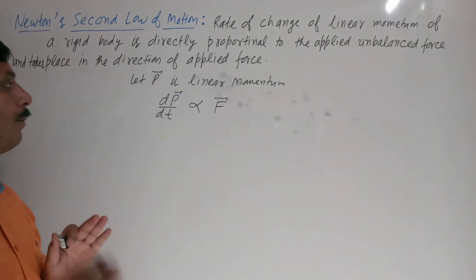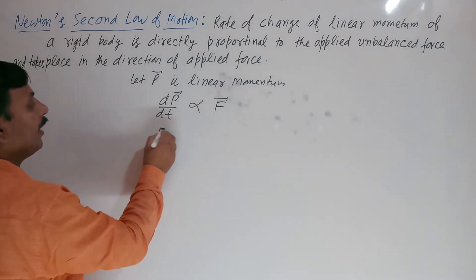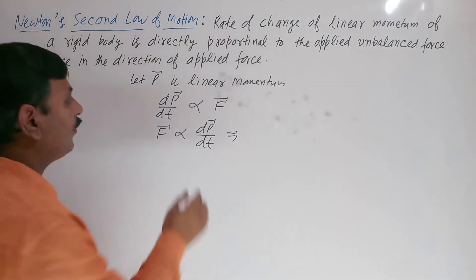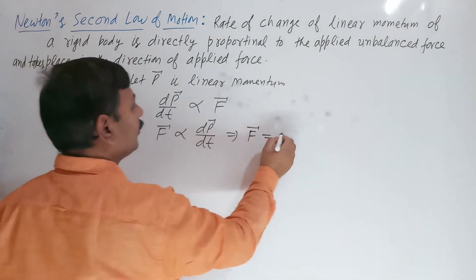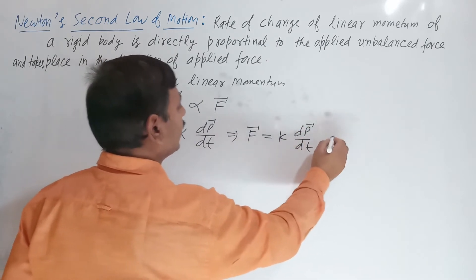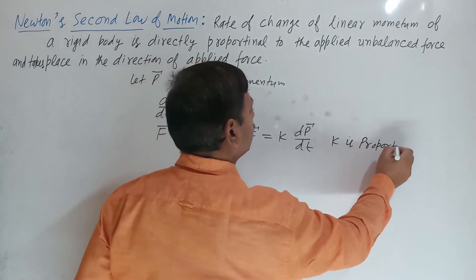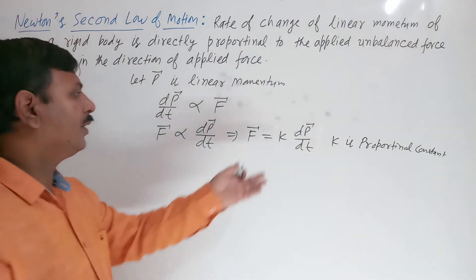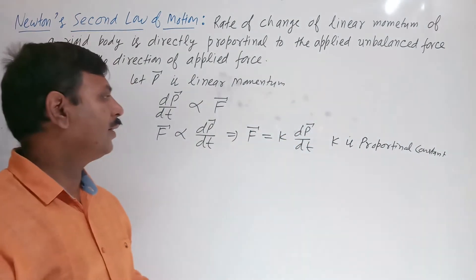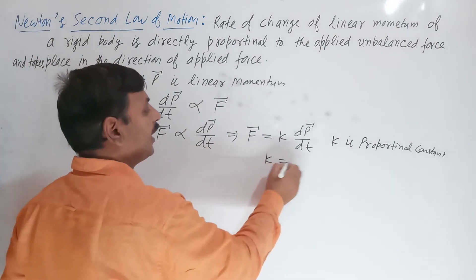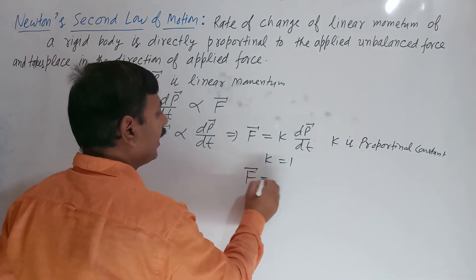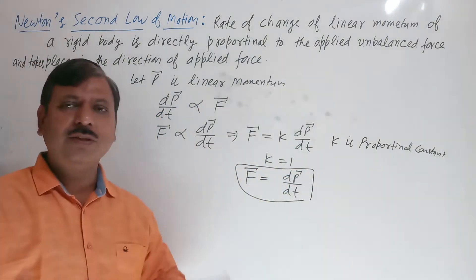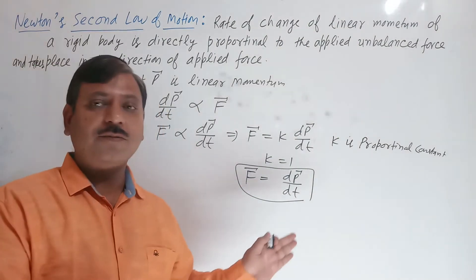We can write F is directly proportional to dp/dt. Removing the proportional sign, we write F = K·dp/dt, where K is a proportionality constant. Practically, experiments have shown K = 1, so F = dp/dt, that is, unbalanced force equals the rate of change of linear momentum.